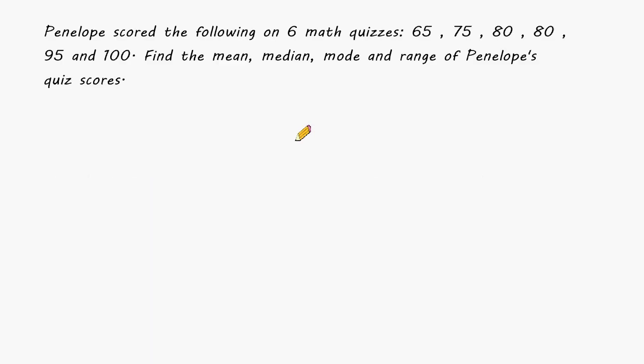In this problem, it says that Penelope scored the following on six math quizzes: 65, 75, 80, 80, 95, and 100. Find the mean, median, mode, and range of Penelope's quiz scores.